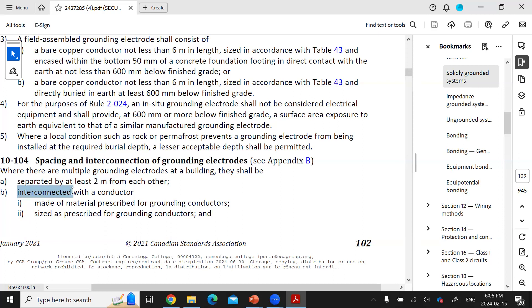This interconnection offers that low impedance path for any of the fault current and enables the quick operation of those overcurrent connection devices. So this item B is going to make sure that the interconnection of those grounding electrodes are going to extend the equipotential.